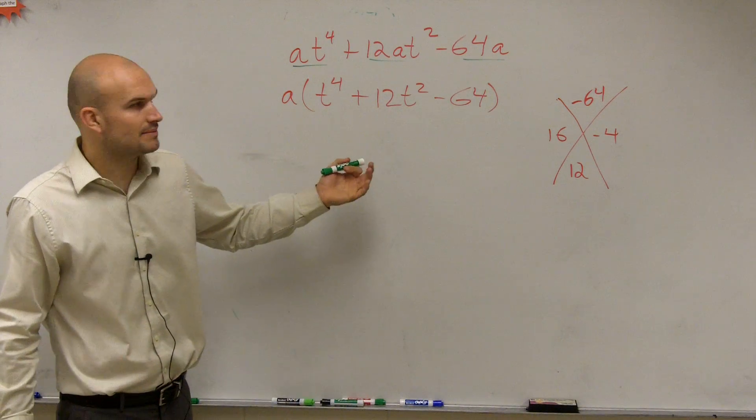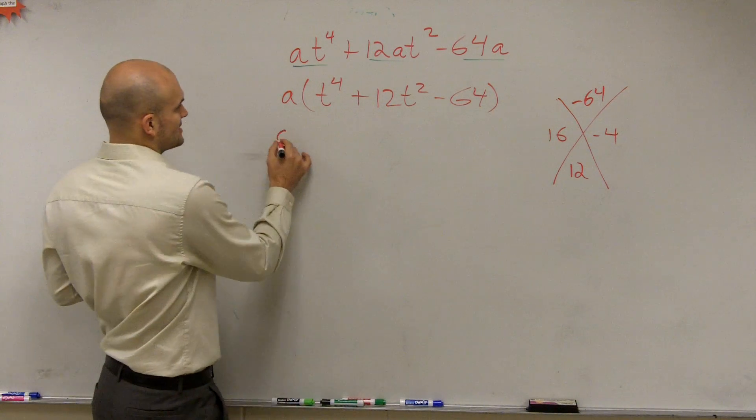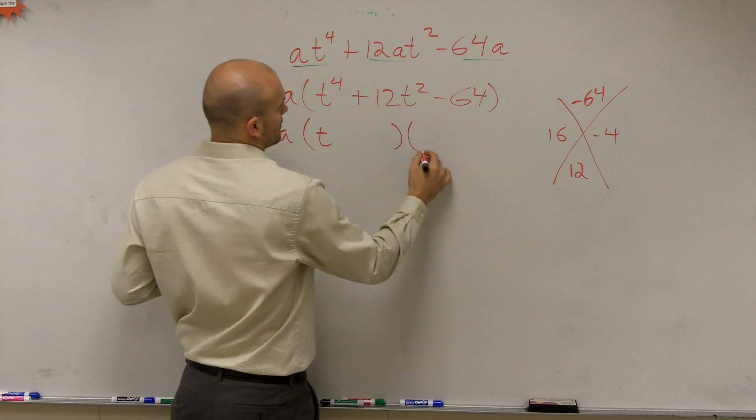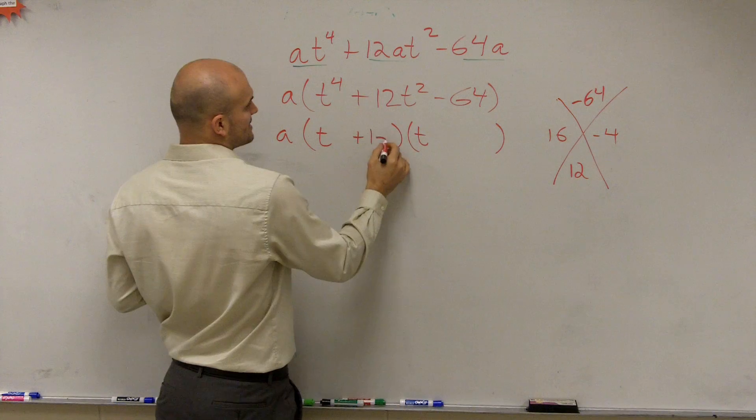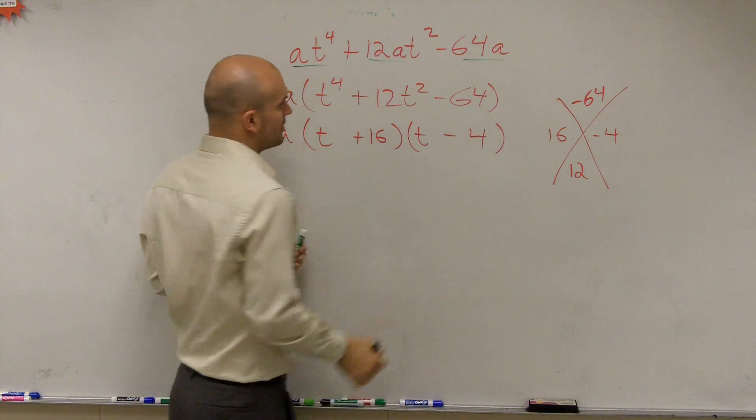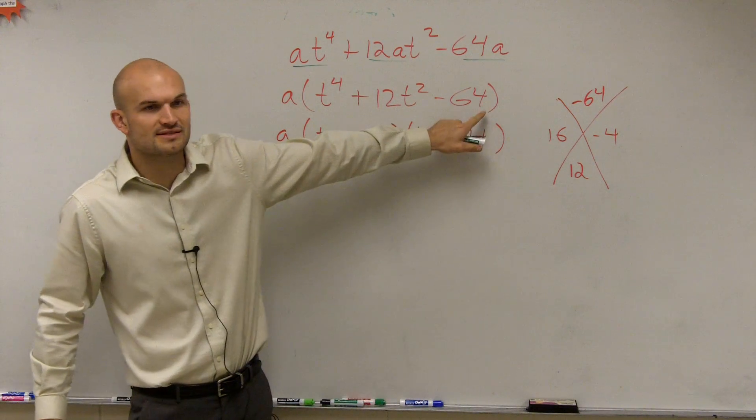Now here comes the problem though. If I look at this, we know it has to be t times t, and we know this is going to be plus 16 and minus 4, right? Because we know 16 times negative 4 gives us negative 64.